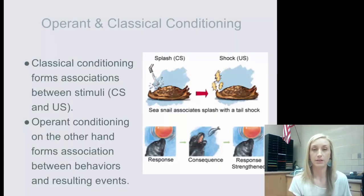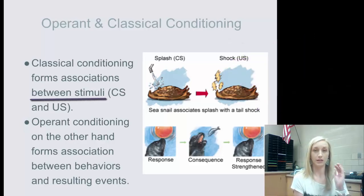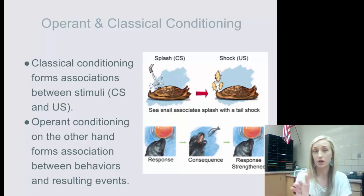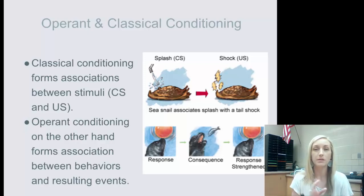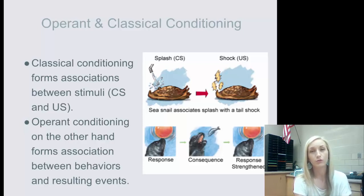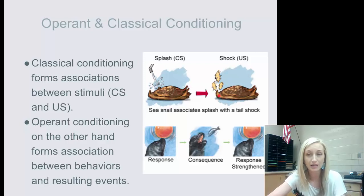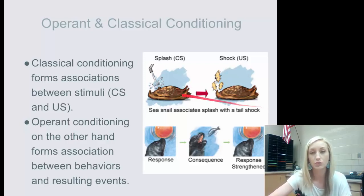Let's first talk about a comparison between operant and classical conditioning. Classical conditioning forms associations between two stimuli — the conditioned stimulus and the unconditioned stimulus. With Pavlov's dogs, the dogs associated the sound of the bell with the food and therefore responded. A common student mistake is saying the dog associates the bell with salivating — no, it's two stimuli: the dog hears the bell, thinks about the food, which makes them salivate. Similarly, a splash of water on a sea snail causes them to associate the splash with a tail shock, the unconditioned stimulus, and therefore respond to the splash.